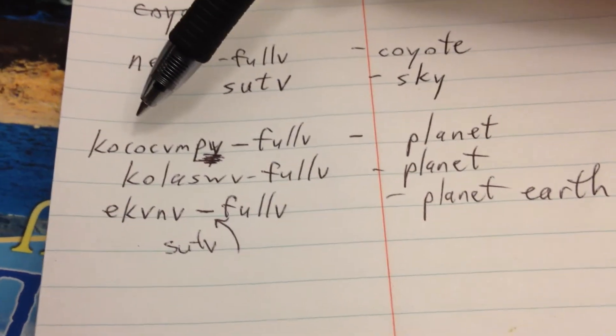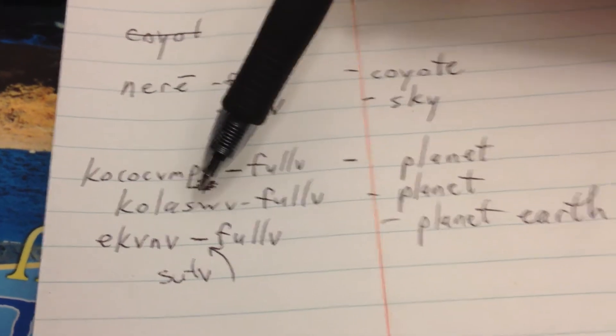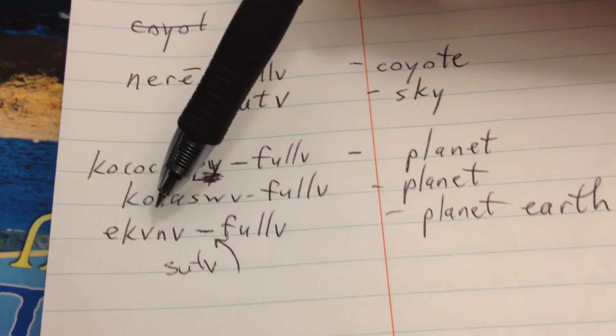So I thought of kojachumpa fula, planet that wanders, kolaswa fula also, or star that wanders, that could be planet, igana fula,